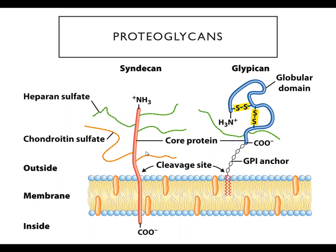Glypicans are another type—these are globular proteins that have heparin sulfates attached to the membrane via what's called a GPI anchor, which is basically a glycolipid. So you have all three components: the lipid part embedded in the membrane, a carbohydrate anchor connecting the lipid to the protein, and then the protein itself has long polysaccharides attached to the so-called core protein. Many of these also have cleavage sites and can be released into the extracellular fluid by enzymes.